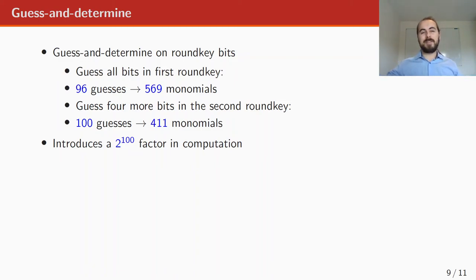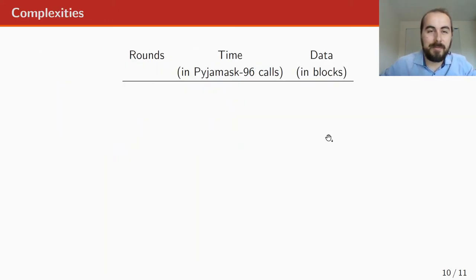And adding all this together, we come to the complexities of our attack. So for 14 rounds, we have a time complexity of 2^115, and a data complexity of 2^96. So this is the full codebook. And this is less than the exhaustive key search on 128 bits. So therefore, technically, or theoretically, it's a break.